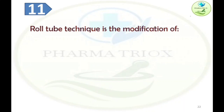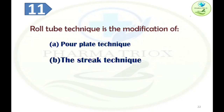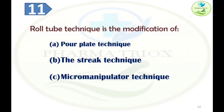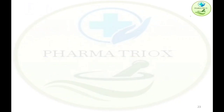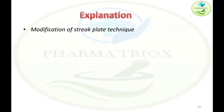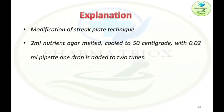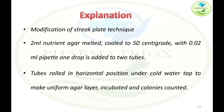Question eleven: Roll tube technique is the modification of — Option A: Pour Plate Technique, Option B: Streak Plate Technique, Option C: Micromanipulator Technique, Option D: Spread Plate Technique. The answer is Option B — Streak Plate Technique. In the roll tube technique, 2 mL of nutrient agar is melted and cooled to 50°C; 0.02 mL is added via pipette, one drop to each of two tubes. The tubes are then rolled in a horizontal position under a cold water tap to form a uniform agar layer. After incubation, colonies are counted.